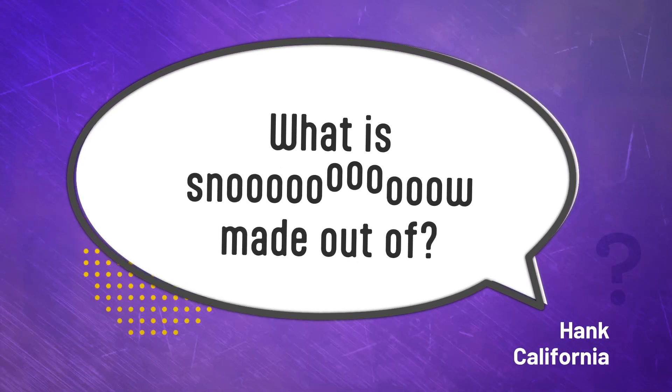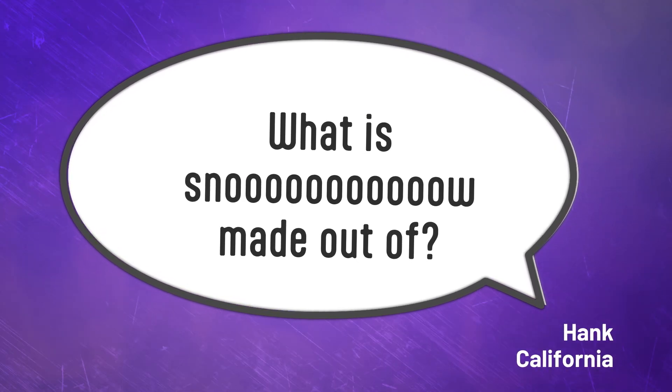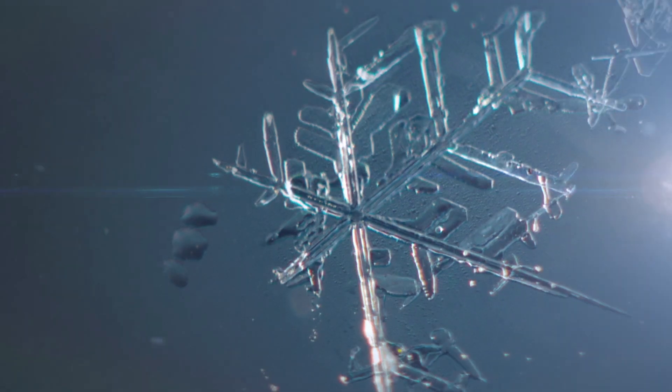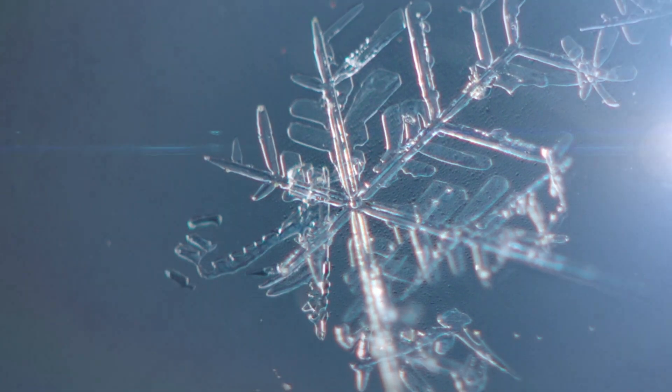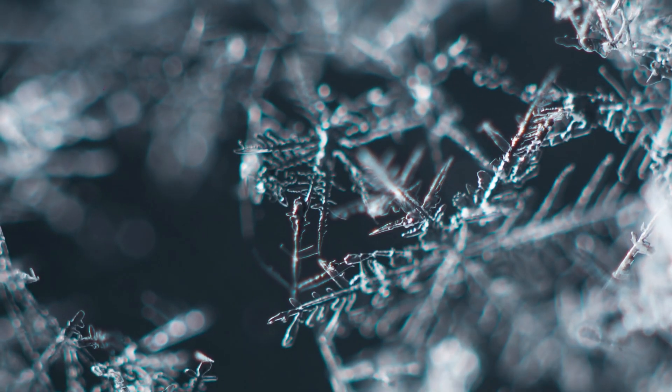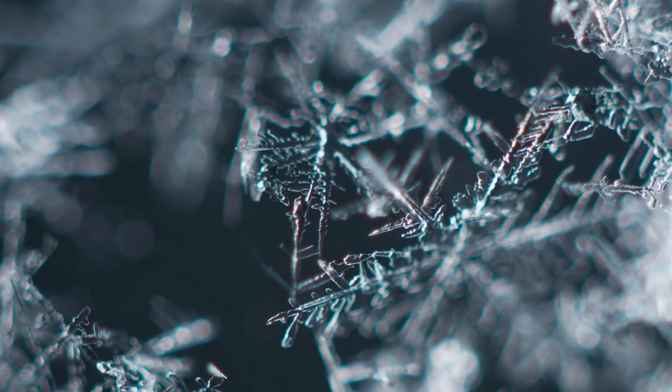What is snow made out of? It starts with a tiny particle of dust or pollen, or something else small and solid but light enough to float up in the atmosphere. If it's cold enough and moist enough up there, water vapor can attach and freeze to the tiny particle and ice crystals form. These ice crystals bump into other crystals and increase in size.